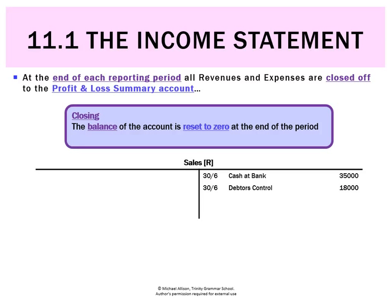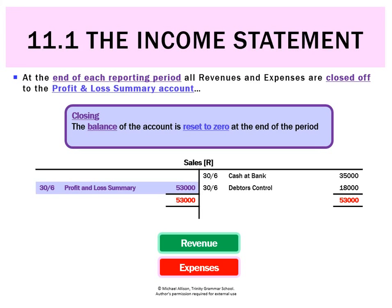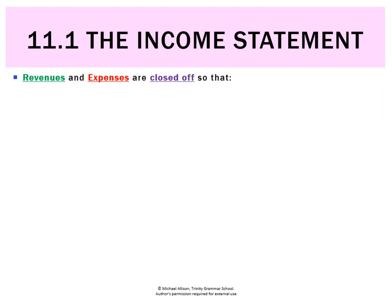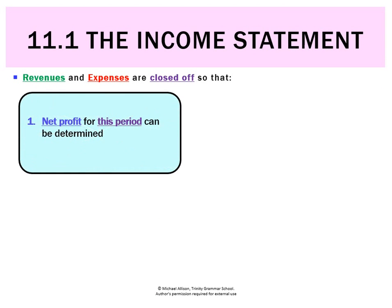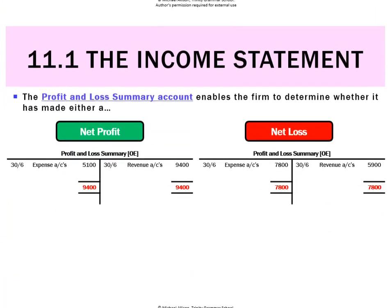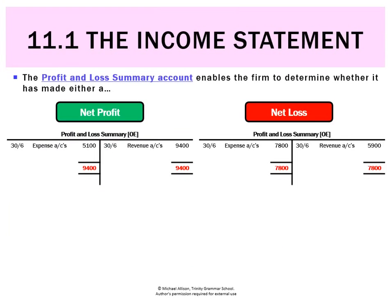To produce the income statement we needed to make closing entries, which was covered in chapter 10. Closing is when the balance of an account is reset to zero at the end of the period — we do that for all revenues, like sales, and for all expenses. We do this firstly to calculate net profit for this period, and secondly to reset balances so we can calculate profit for the next period.